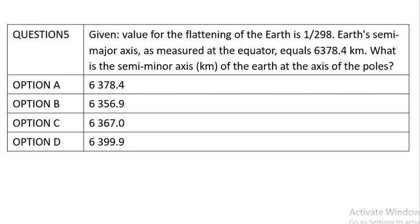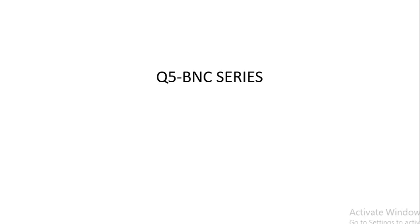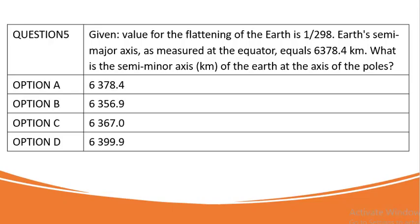Hello everyone, welcome once again to another general navigation mathematical problem — question 5 in the BNC series. The question is: given the value of the flattening of the earth is 1 by 298, and the earth's semi-major axis as measured at the equator equals 6378.4 kilometers, what is the semi-minor axis in kilometers of the earth at the axis of the poles?